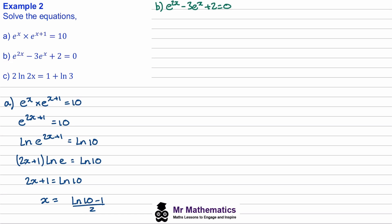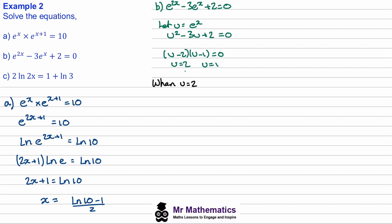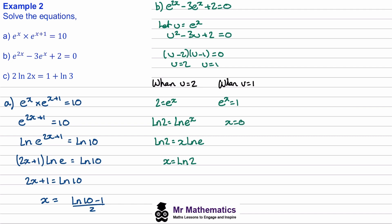For part B, we can see that this equation looks like a quadratic, where we've got a power of 2, a power of 1x, and a constant term. So if we let u equal e to the x, then we can rewrite this as u squared minus 3u plus 2, and we can factorise this. Our solutions are u equals 2 and u equals 1. When u equals 2, we substitute back: 2 equals e to the x, we take the natural log of both sides, bring this power down, cancel the natural log of e, so x equals the natural log of 2. Our other solution comes from u equals 1: e to the x equals 1, so x must equal 0. These are our two solutions.